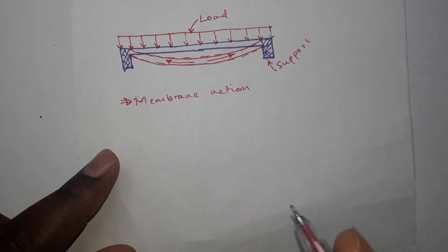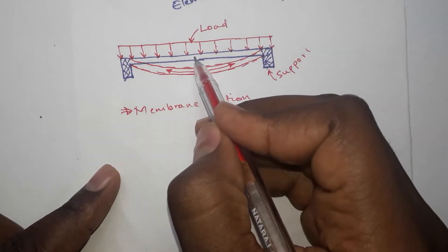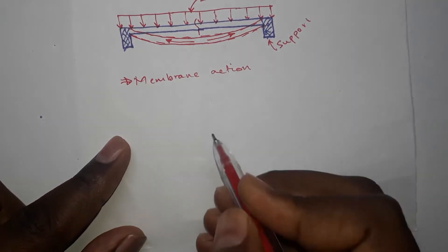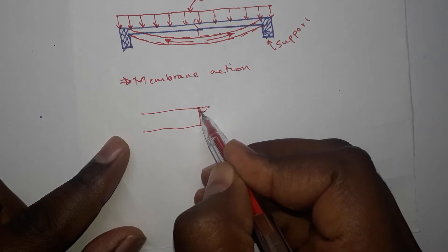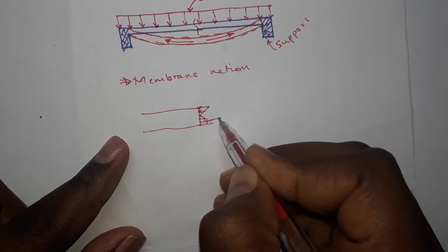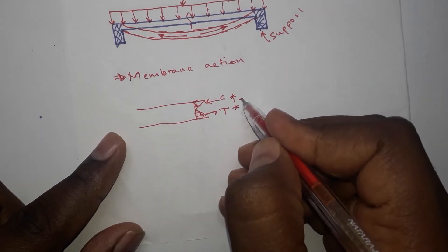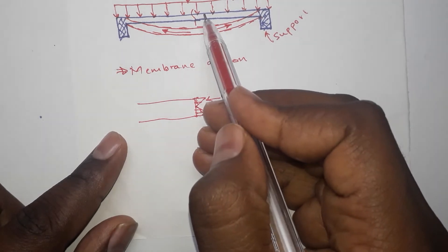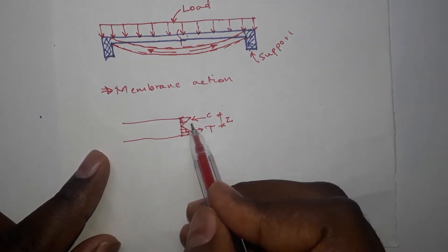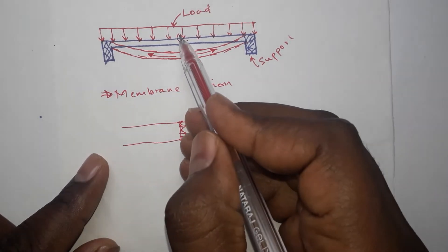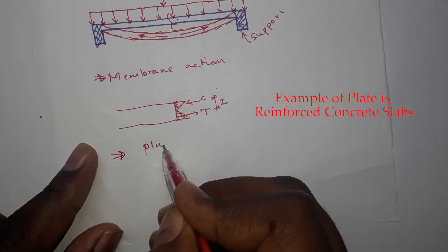But if this member does have flexural stiffness, it means when this kind of loading acts on it, it will have — for example, let us take a section here and magnify it — compression at the top and tension at the bottom. So here you have the resultant tension and here you will have resultant compression, and a distance between them — let us call it Z, a lever arm. So if this area element resists the applied loading by developing compression and tension, and due to this it will have an internal moment capacity, then this element is called a plate element.